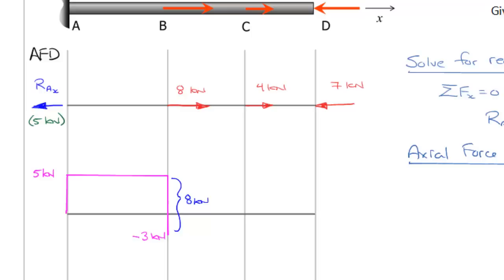Again, we have a period of constant internal axial load until we go over here. The 4 kN pushes us down an additional 4 kN, and that brings us to minus 7 kN.